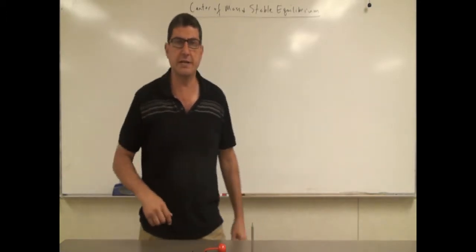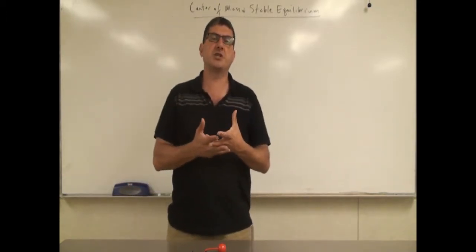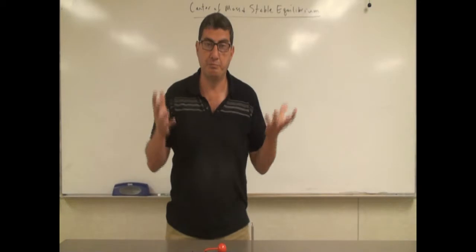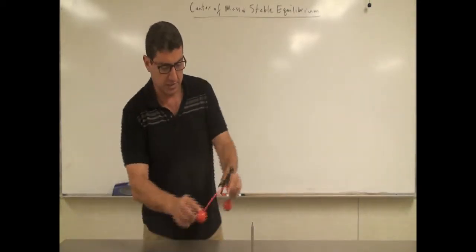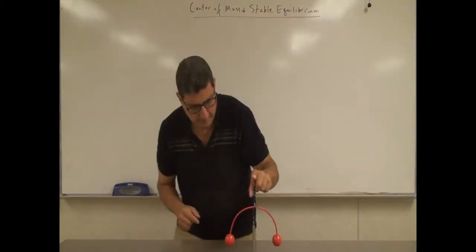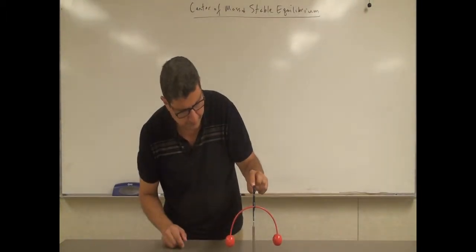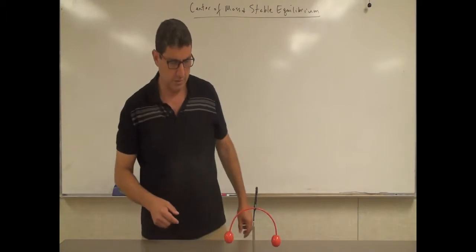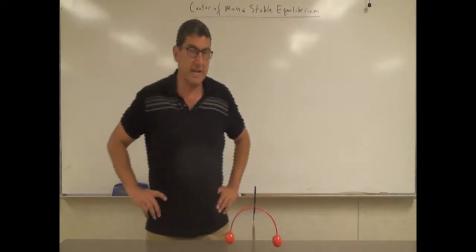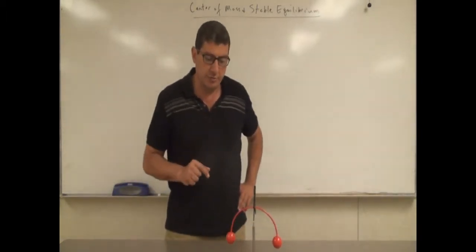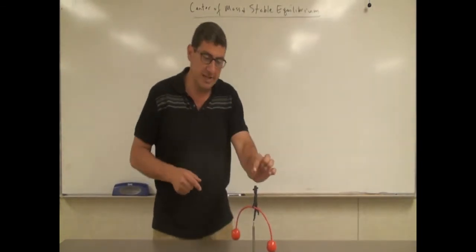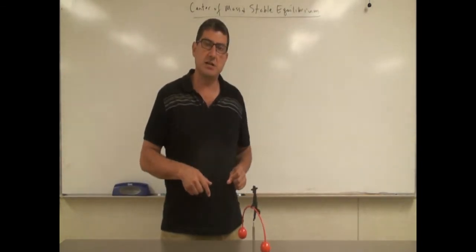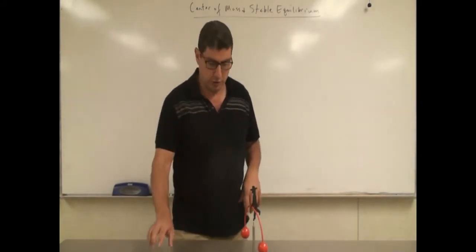In physics, a stable equilibrium is such that it is a minimum potential energy of the system. Notice it's oscillating back and forth around that stable equilibrium point — it's not falling. If it was unstable, as soon as I displaced it a little bit, it would fall.